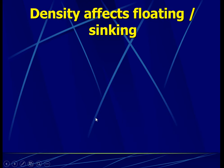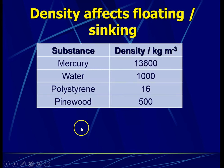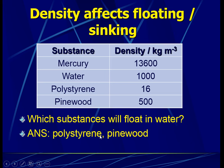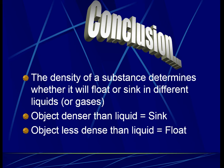Another property of density is that it affects whether an object floats or sinks. Looking at a table with densities of mercury, water, polystyrene, and pine wood: polystyrene and pine wood will float in water because their densities are less than that of water. Mercury will sink because its density is greater than water. The conclusion: if an object's density is less than the liquid, it floats; if greater, it sinks.